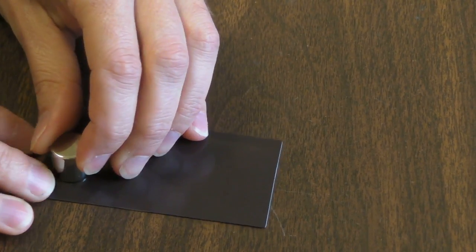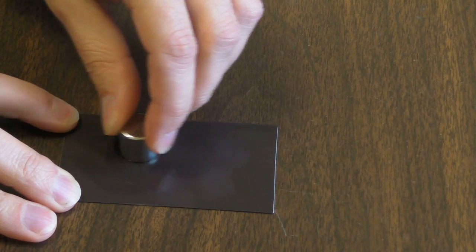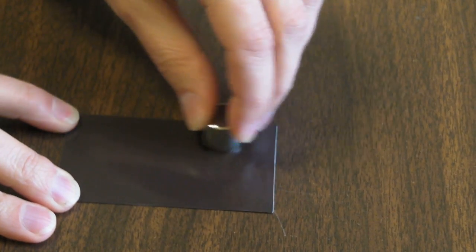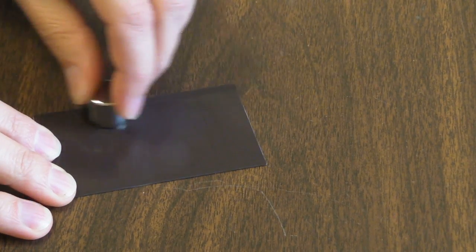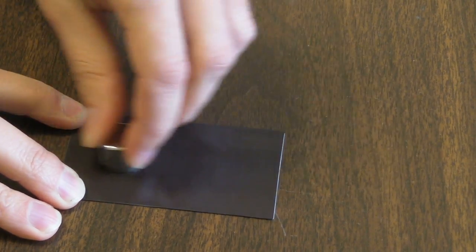What this is doing is exposing the flexible magnet to all one pole. So it'll all kind of look like a north pole. All those fancy stripes will be gone.